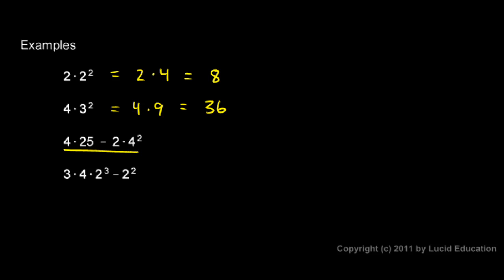In this third example, we do the exponent first. So I'm going to rewrite the whole problem just evaluating that exponent. This is 4 times 25 minus 2 times 16, because the 4 squared gives me that 16. Now I have a multiplication, a subtraction, and a multiplication. I need to do the multiplication and division. And there's no division here, just multiplication.